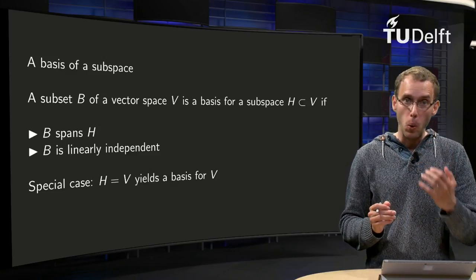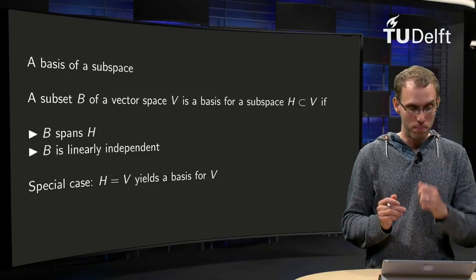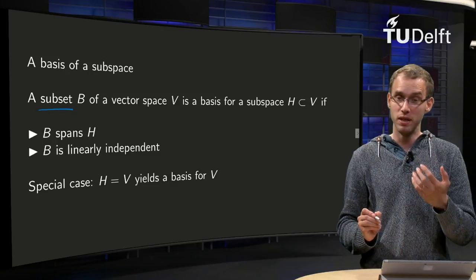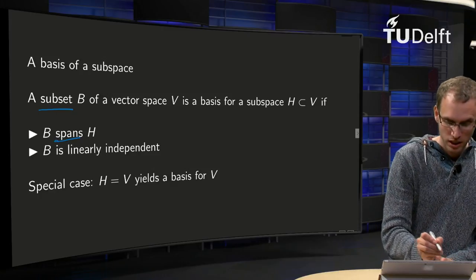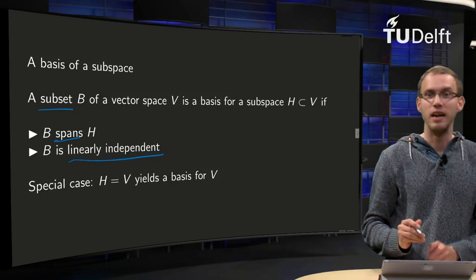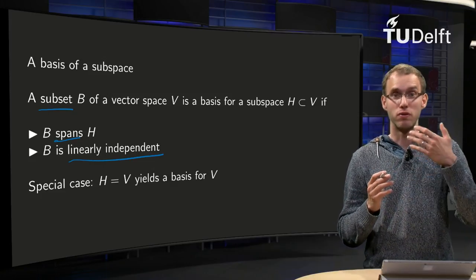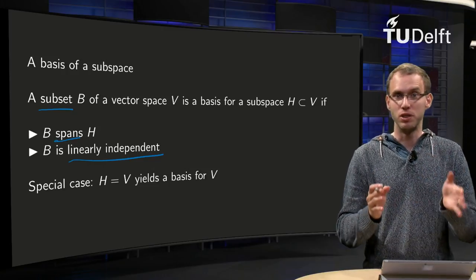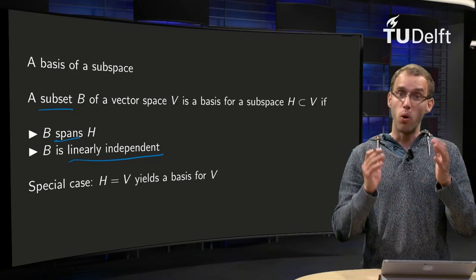So, what is a basis of a subspace of a general vector space? A basis is a subset B of a vector space V if it spans H and if it is linearly independent. Then B is a basis for a subspace H of V. A special case of course is H equals V, and B is a basis for the whole vector space.